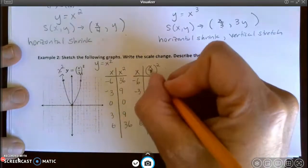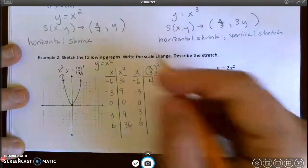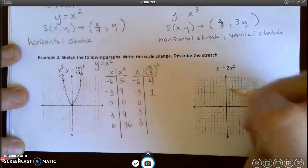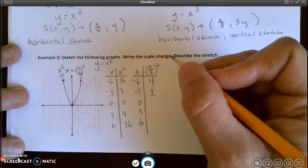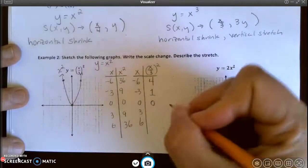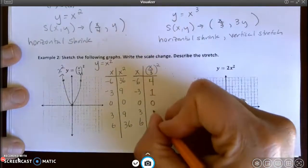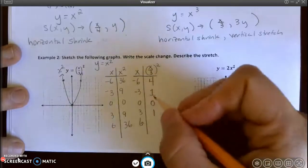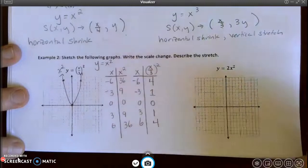Negative 3 divided by 3 is negative 1. Square negative 1, I get positive 1. Then take 0 divided by 3 is 0. Square 0, I still get 0. 3 divided by 3 is 1. Squared is 1. 6 divided by 3 is 2. 2 squared is 4. All right.